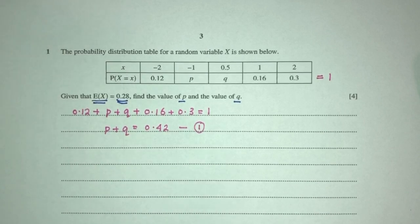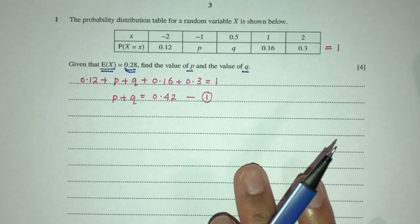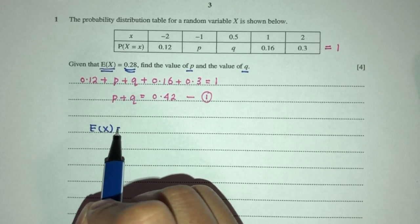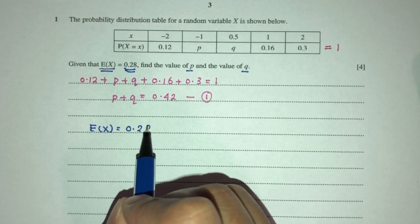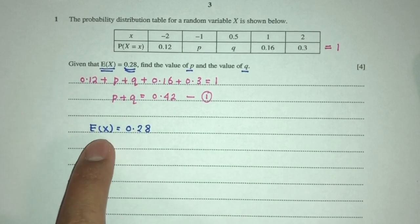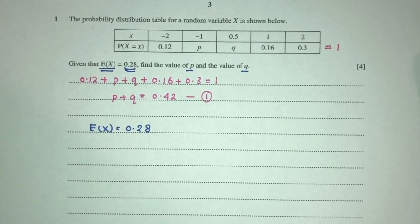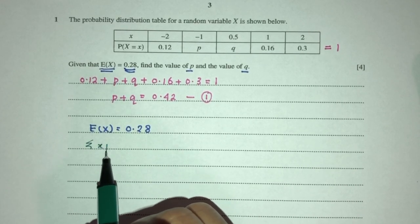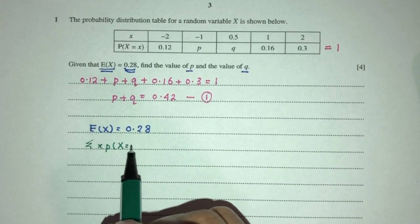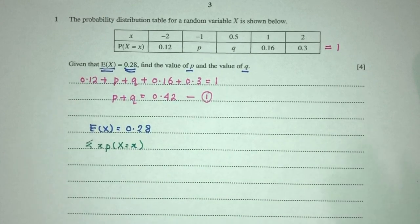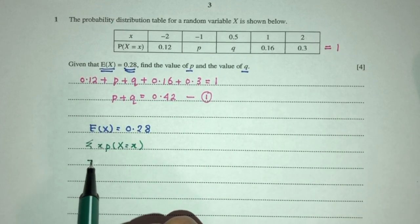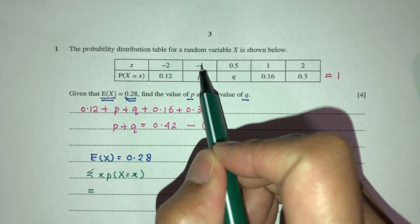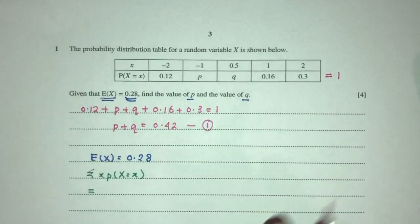Now we have to use this one. Given that the expectation of X is equal to 0.28, the main point is you have to know how do you find this. Usually, we use a formula to find this. It is the summation of X and then P of X equal to X. What it means is we have to add this times this plus this times this and so on. That's what it means.